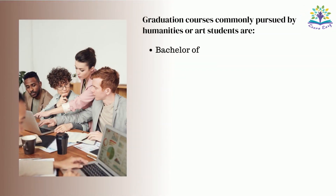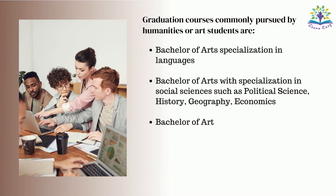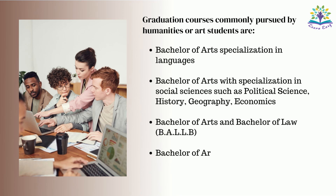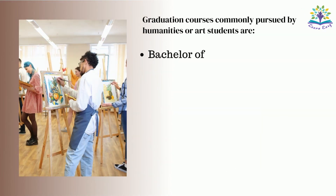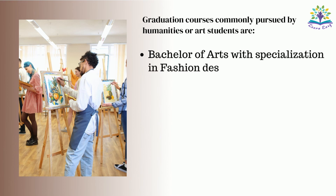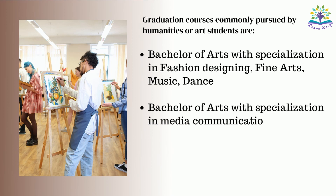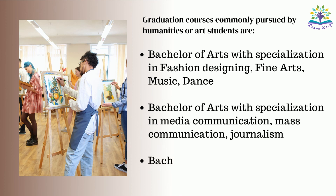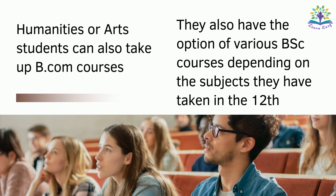Graduation courses commonly pursued by Humanities or Arts students are Bachelor of Arts with Specialization in Languages or in Social Sciences such as Political Science, History, Geography, Economics; Bachelor of Arts and Bachelor of Law; Bachelor of Arts with Specialization in Sociology, Philosophy, Psychology, Physical Education, or with Specialization in Fashion Designing, Fine Arts, Music, Dance. You can specialize in Media Communication, Mass Communication, Journalism, or Bachelor of Business Administration. Humanities or Arts students can also take up BCom courses, and also have the option of various BSc courses depending on the subjects they have taken in the 12th.